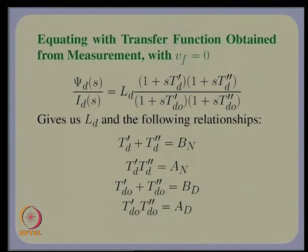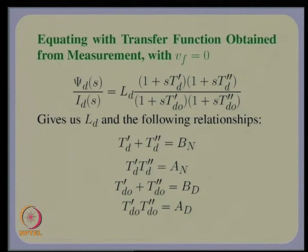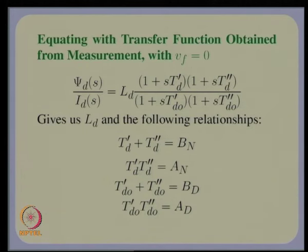If we carry out a measurement with v_f = 0, what we effectively get are the coefficients of the transfer function, or equivalently the time constants T_d', T_d'', T_d0', T_d0'', and L_d. The coefficients a_n, b_n, b_d, and a_d are related to these time constants by four equations. These are the standard parameters obtained from one measurement.